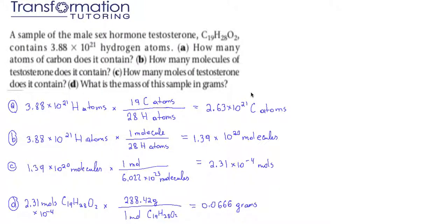A sample of the male sex hormone testosterone C19H28O2 contains 3.88 times 10 to the 21st hydrogen atoms. Part A: How many atoms of carbon does it contain? If we look at the formula C19H28O2, we see that one molecule of testosterone contains 28 hydrogen atoms, 2 oxygen atoms, and 19 carbon atoms.